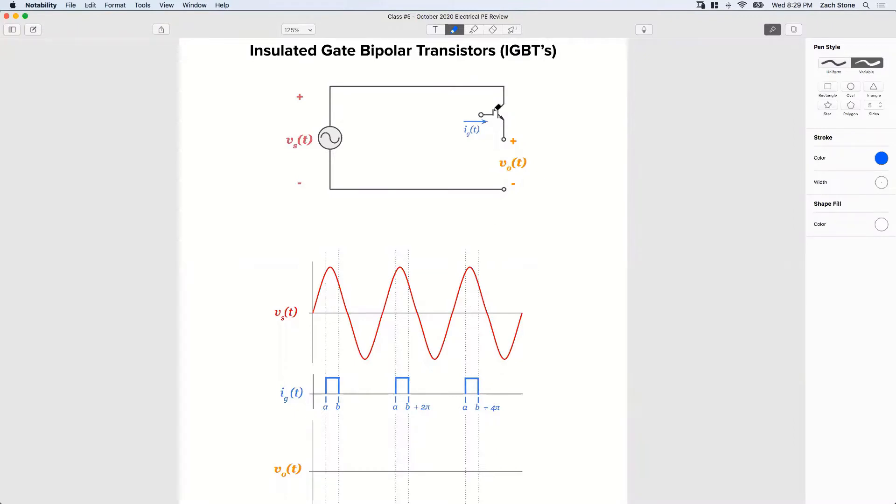So now, yeah, exactly. We can control when it closes, like a thyristor, by sending a pulse to the gate. So alpha is going to close our IGBT. Right? And then beta is when we stop firing the gate, right? Beta is when we take the current off the base gate. Alpha, the gate current is applied. Beta, the gate current is turned off.